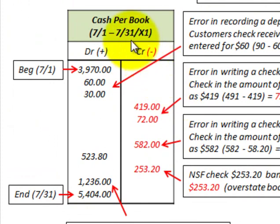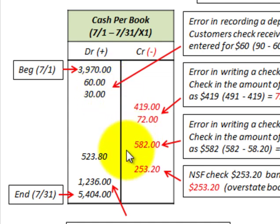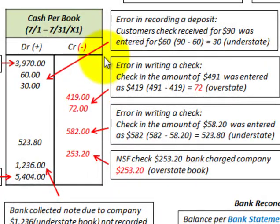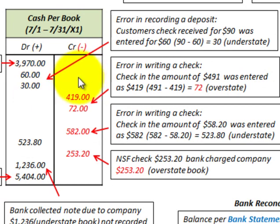Looking at cash per the books: we start with a beginning balance on July 1st of $3,970. We'll have some debits and credits from checks entered incorrectly, and then an ending balance of $5,404. When we make debits and credits to cash, there would also be an associated debit or credit to another account, but we're going to focus just on how the errors affect our cash amount.